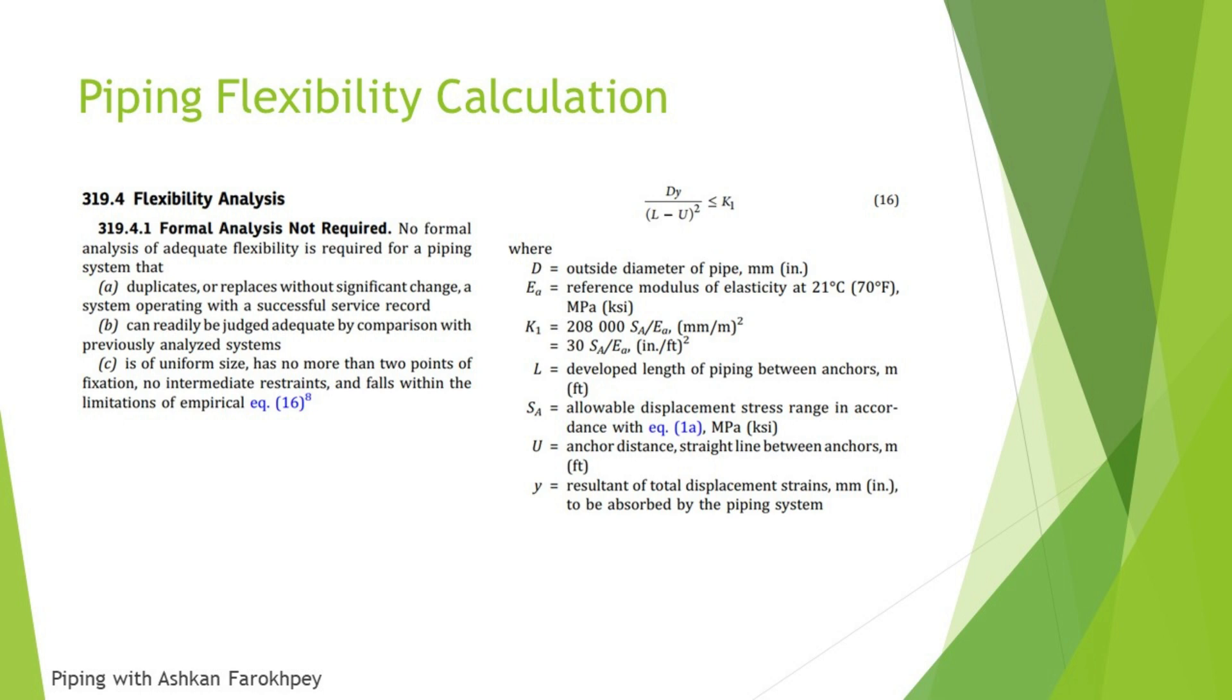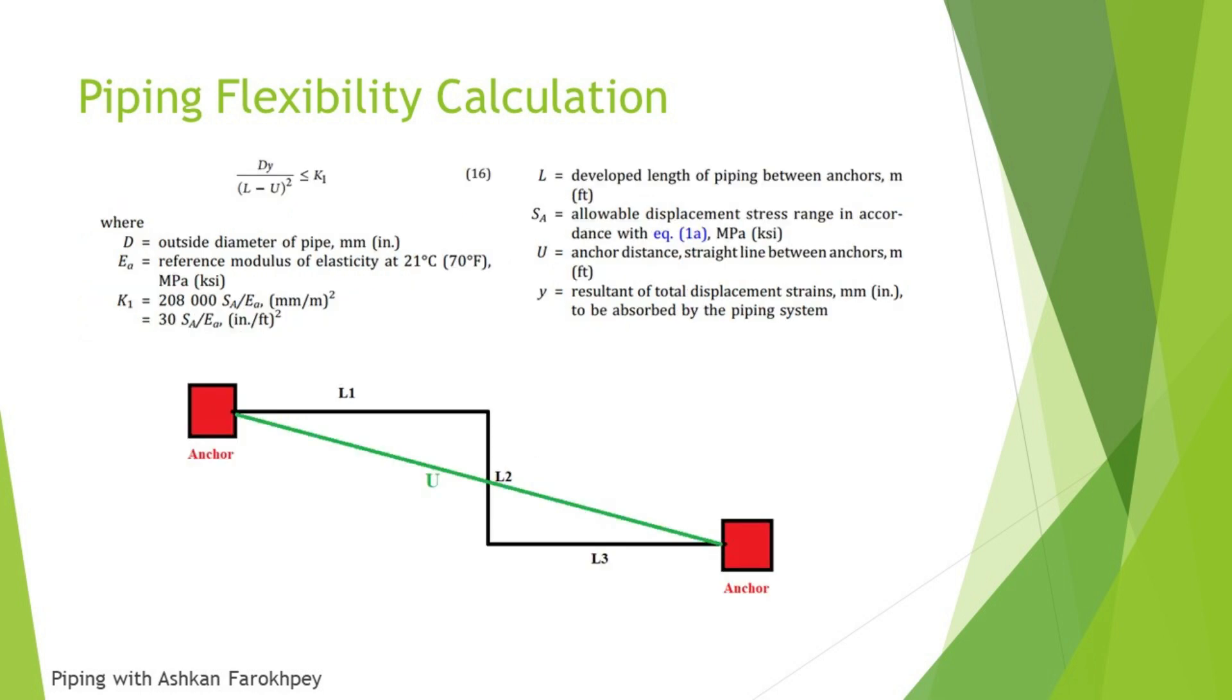SA is the allowable displacement stress range and IA is the Young's modulus or modulus of elasticity of your material at 21 degrees Celsius. By using this formula you can calculate the maximum allowable displacement that your system can have without exceeding its allowable stress.